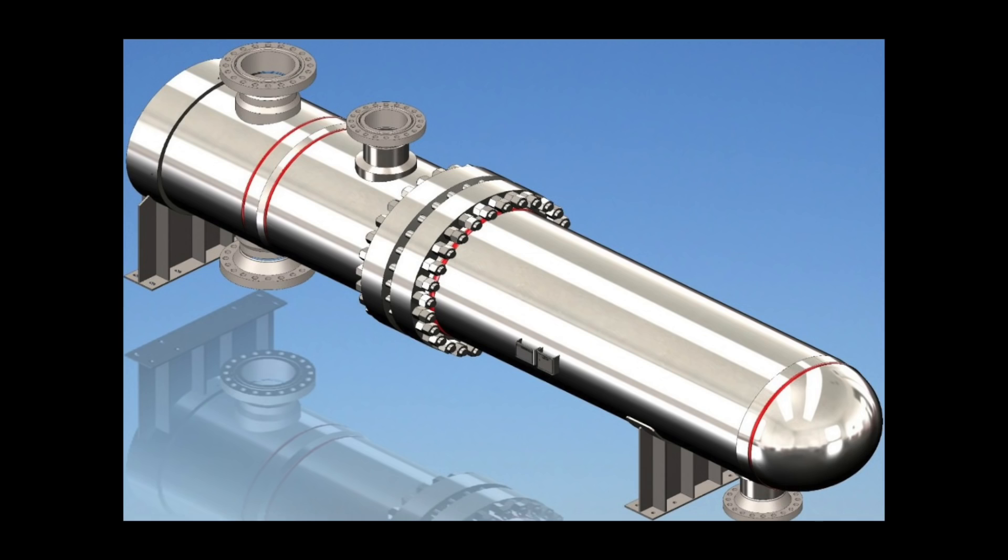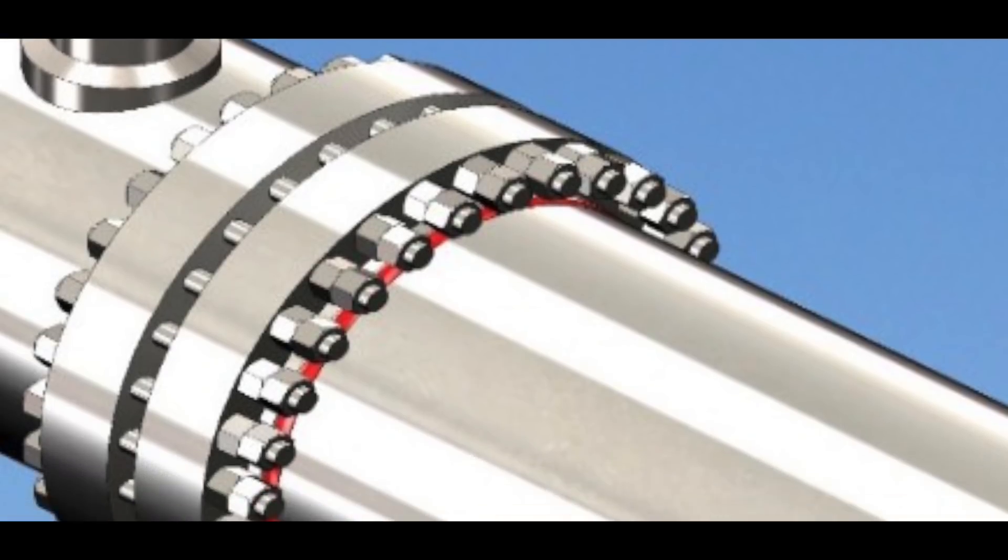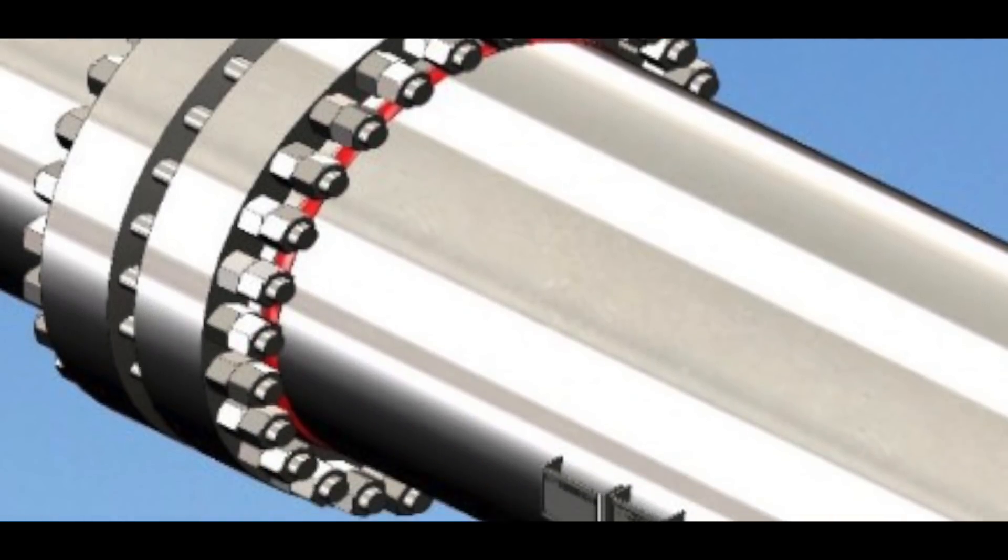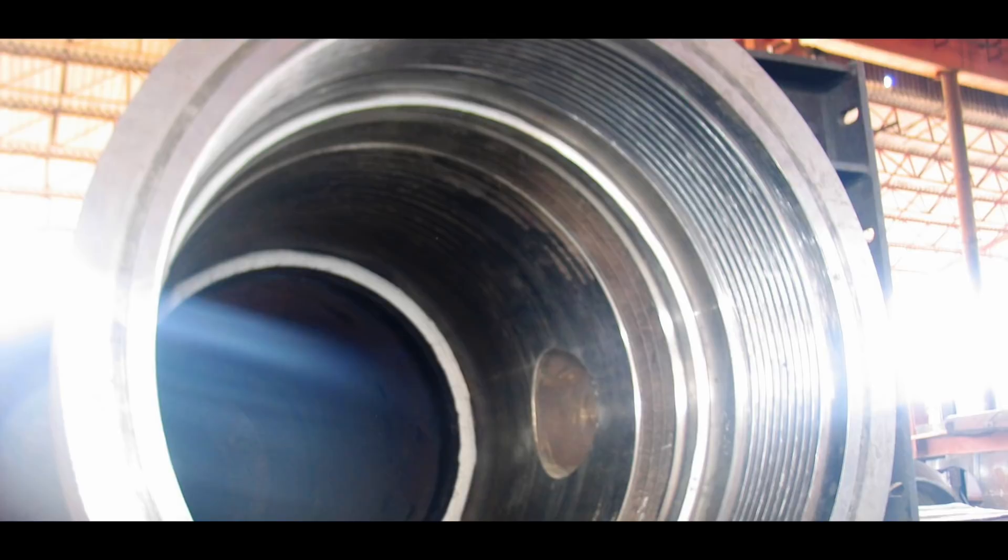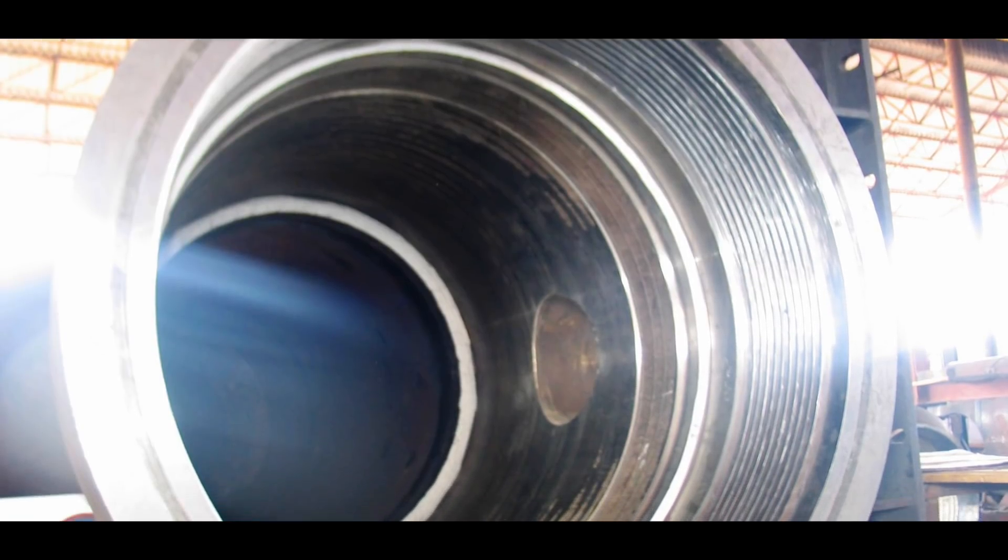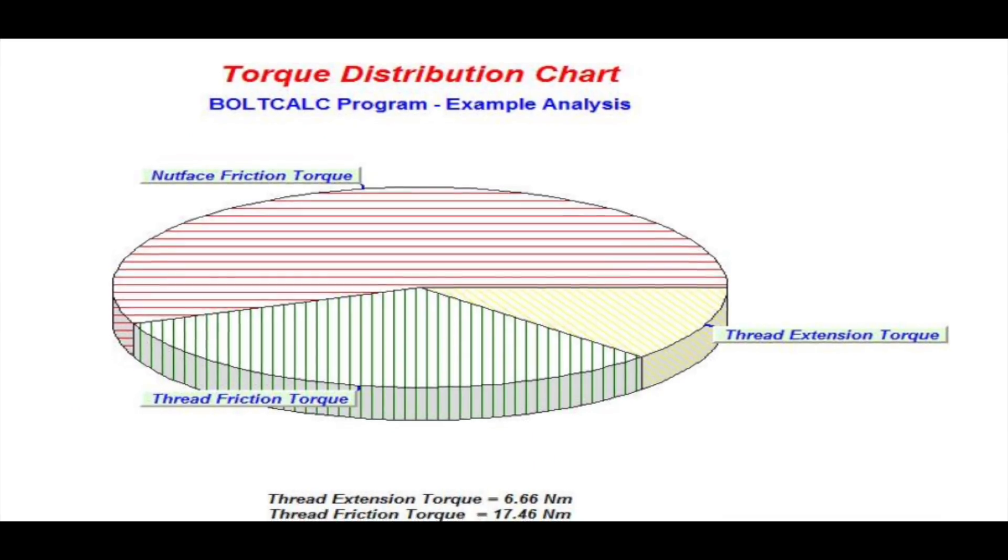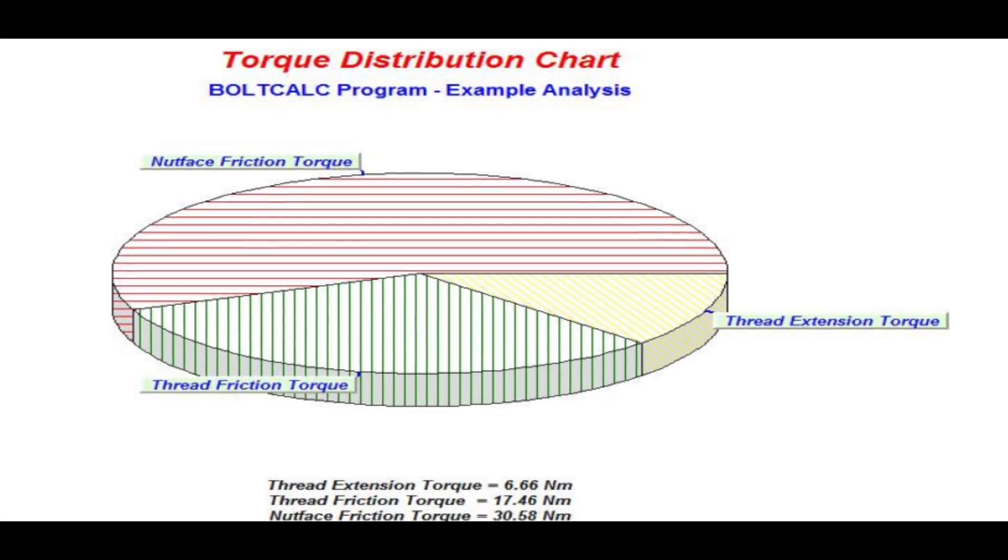Point 5: Tightening procedures should be such that the minimum load applied is uniformly distributed throughout the gasket. This is because the key element is the axial load on the gasket at each bolt location and not the torque applied.